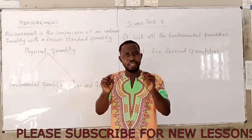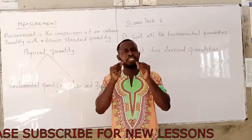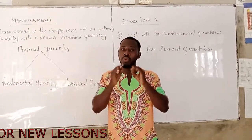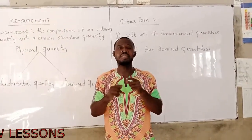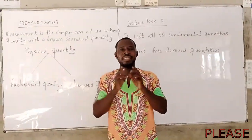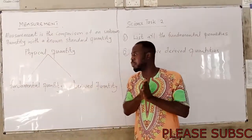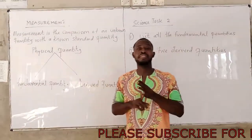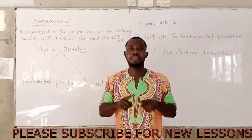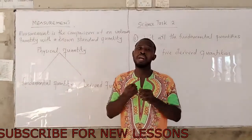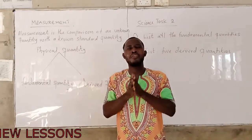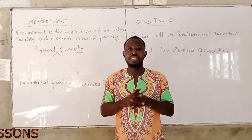There are seven fundamental quantities, and it is very important that you know them. I will mention some of them and the rest you will find in your textbook. The seven fundamental quantities are: time, length, mass, temperature, amount of substance, and luminous intensity.